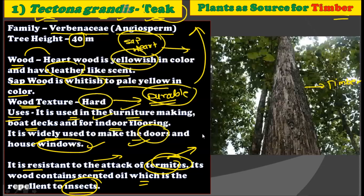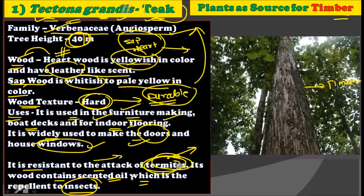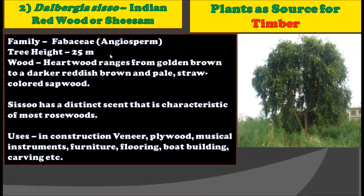The durability of this wood is very high because it contains a natural repellent for termites. So, Tectona grandis is the first plant producing timber, belonging to the family Verbenaceae, an angiosperm, growing up to 40 meters. Its hardwood is yellowish and sapwood whitish to pale yellow, used for furniture, flooring, doors and windows, and is highly resistant to termites due to its scented oil.